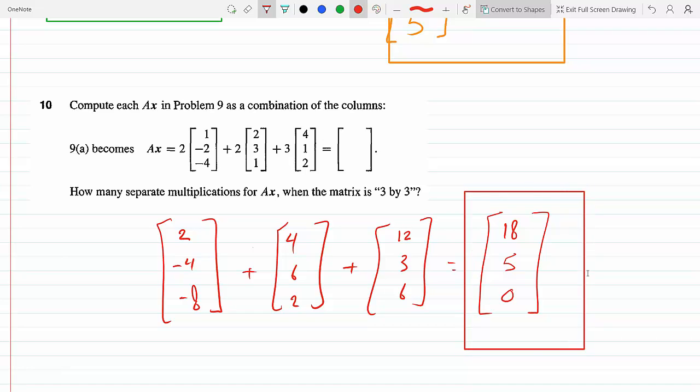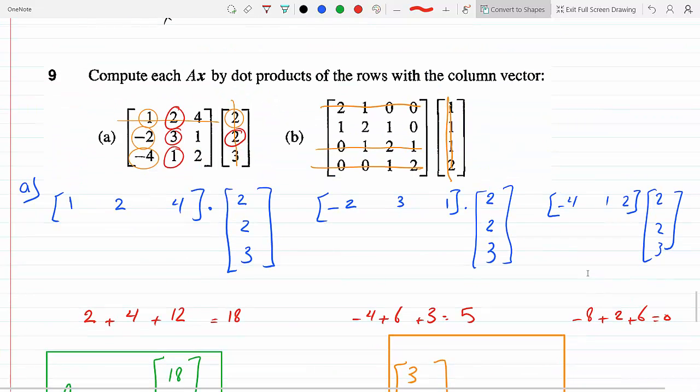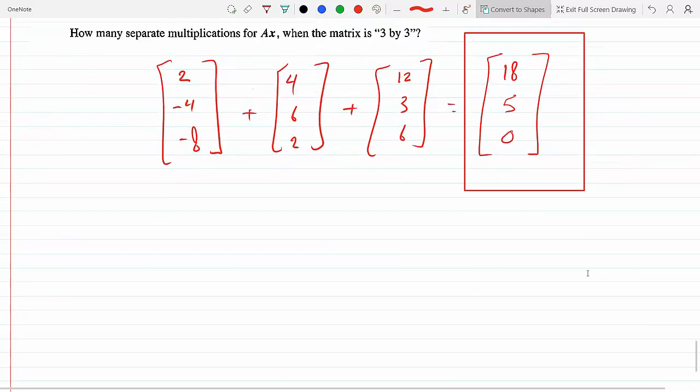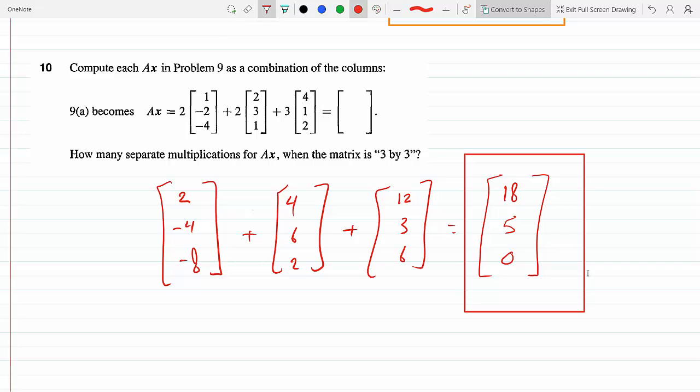And then it says if you have a 3 by 3, when the matrix is 3 by 3, well following the same reasoning, we're gonna do this two times more for each one of the columns. So each cell of each column of the first matrix times the column of the second matrix. The second matrix has three columns, we're gonna have to do this three times, and each time there's three multiplications. So there's gonna be a total of nine separate multiplications.